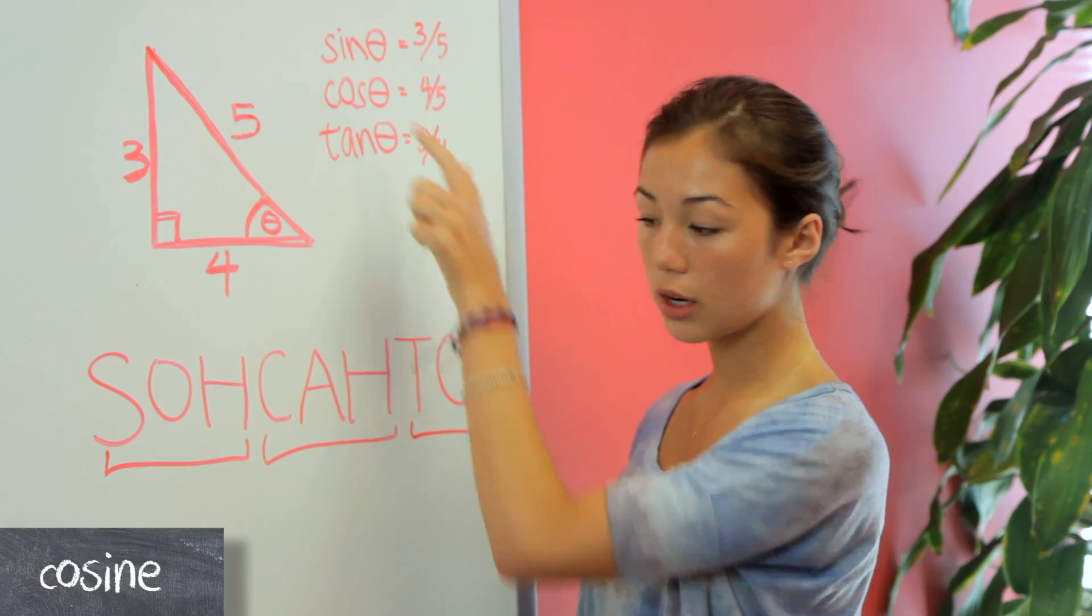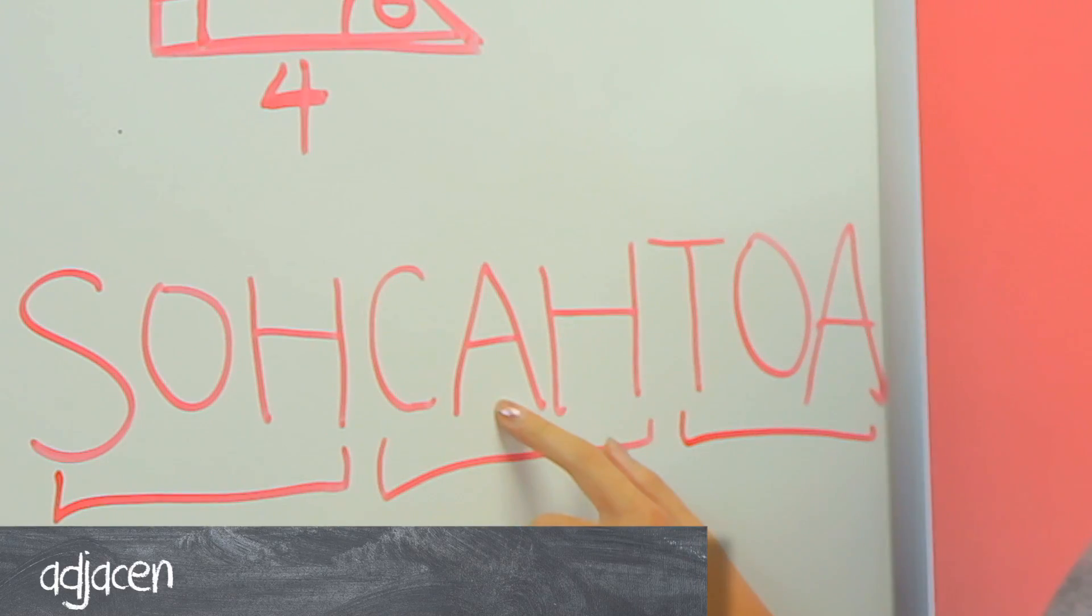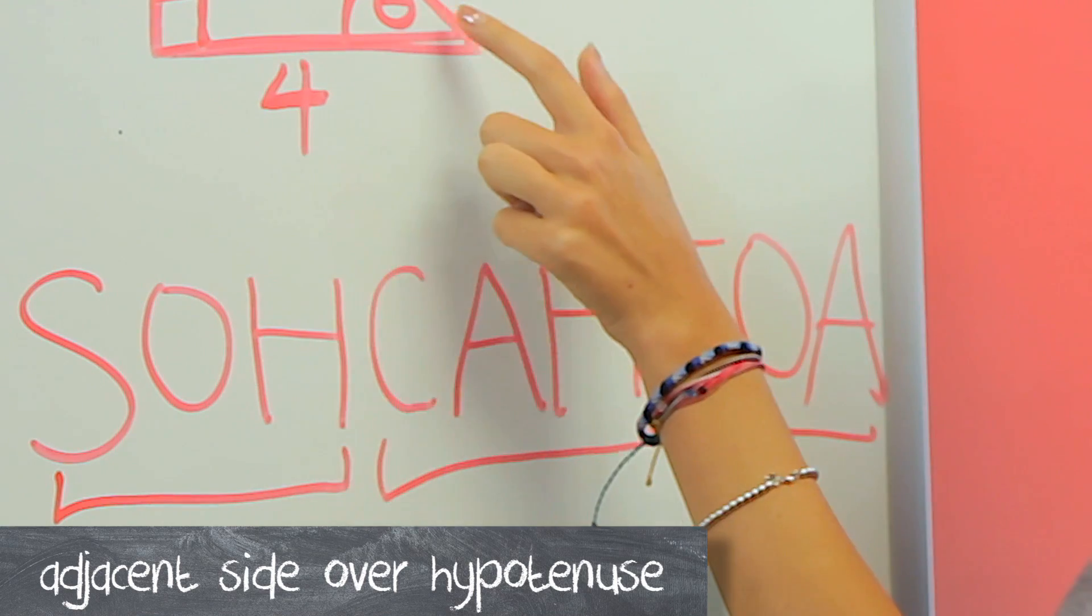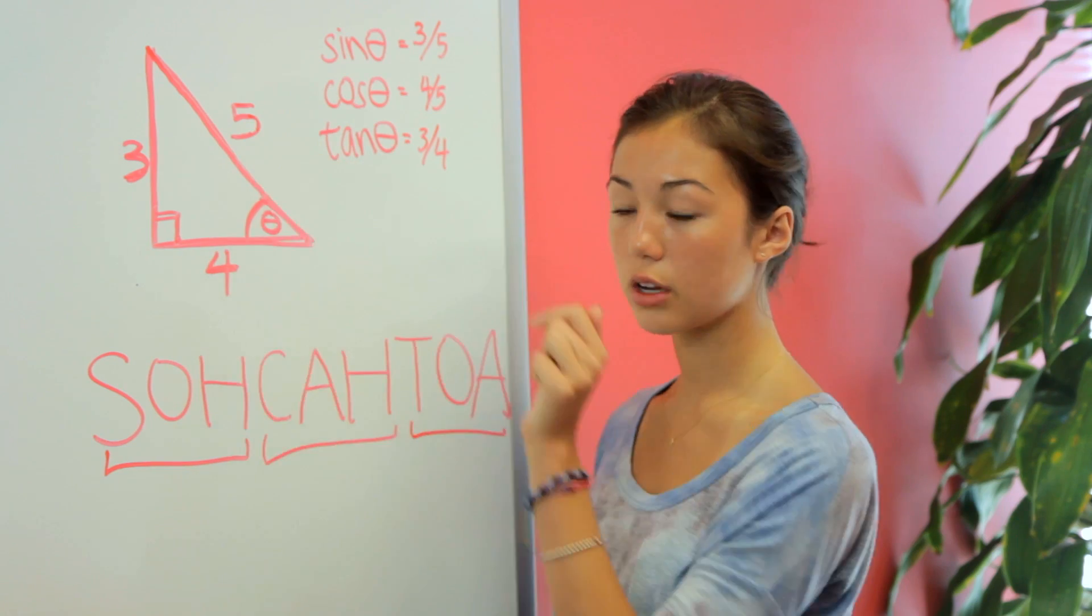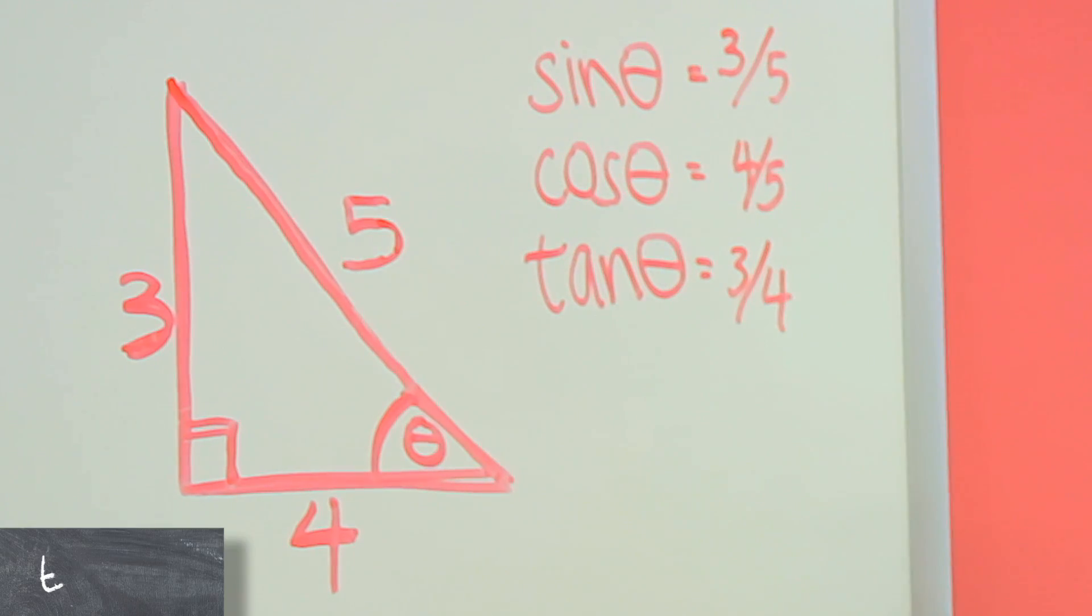Then for cosine of theta, we're going to do adjacent over hypotenuse. So the adjacent side of this angle is 4, and the hypotenuse is still 5. So we have 4 over 5 for the cosine.